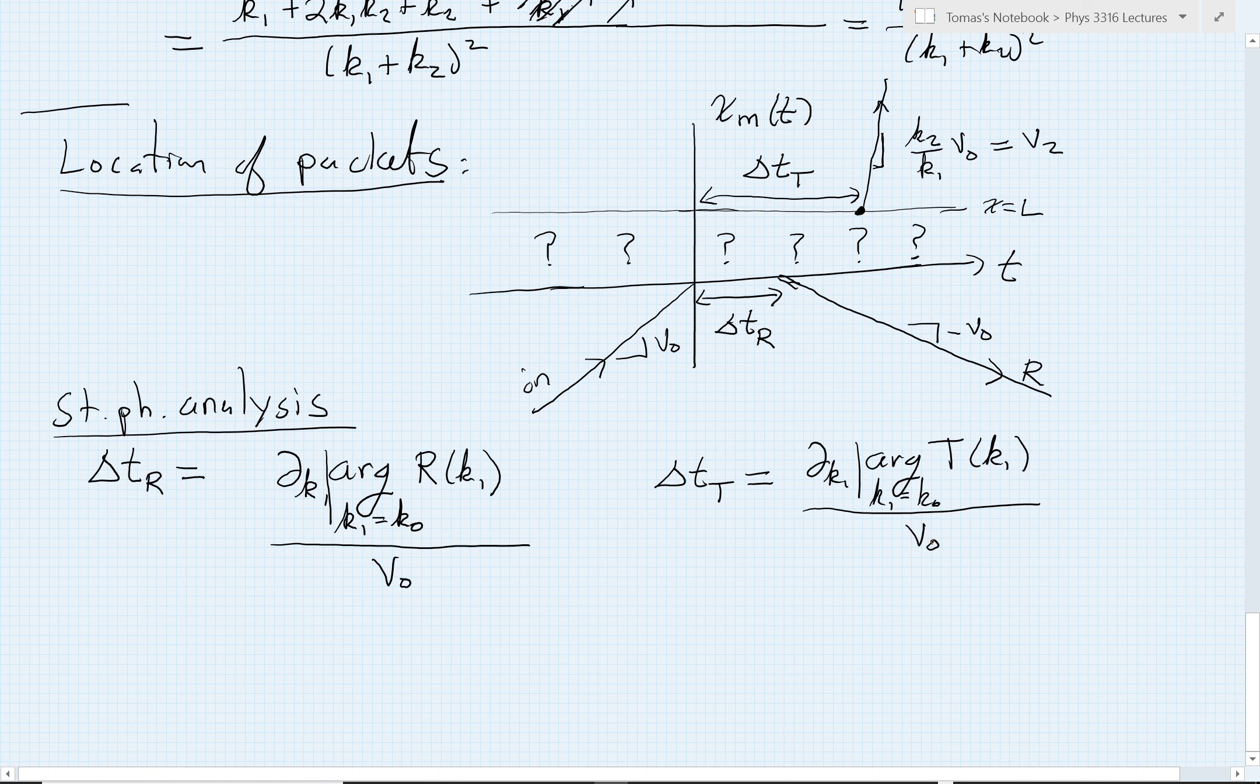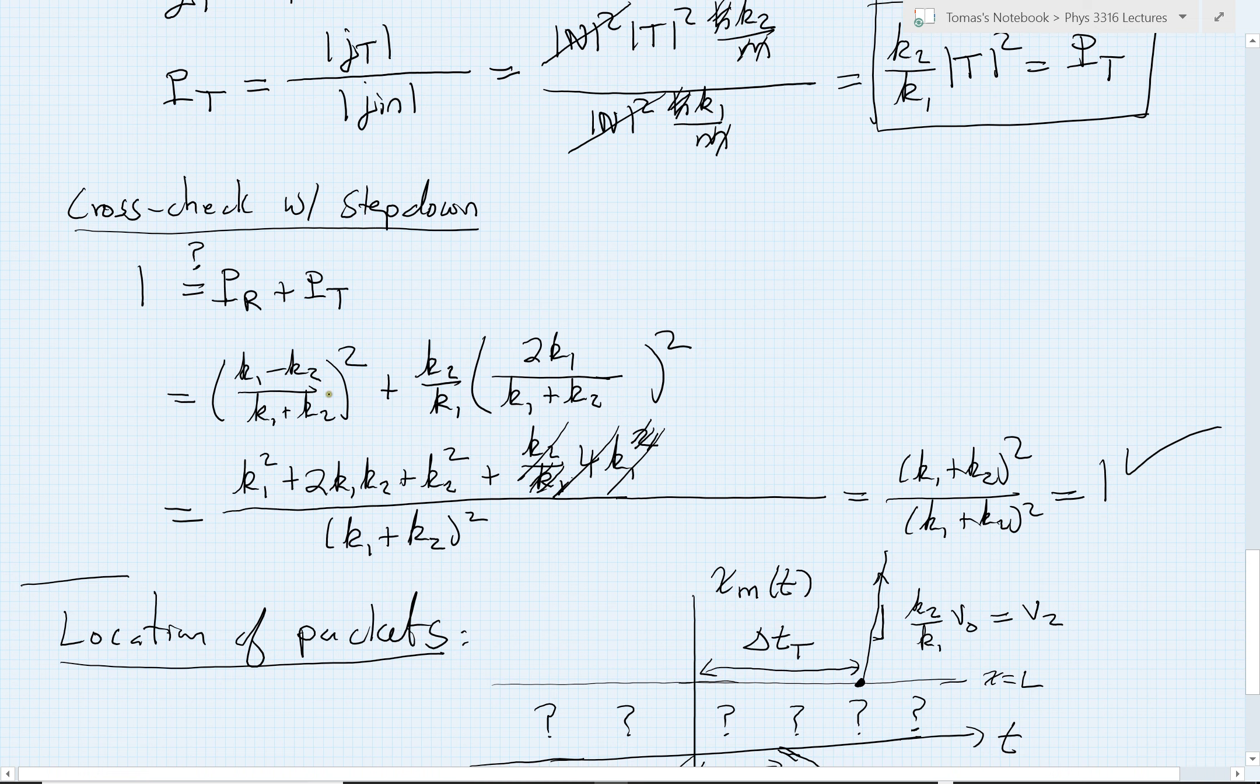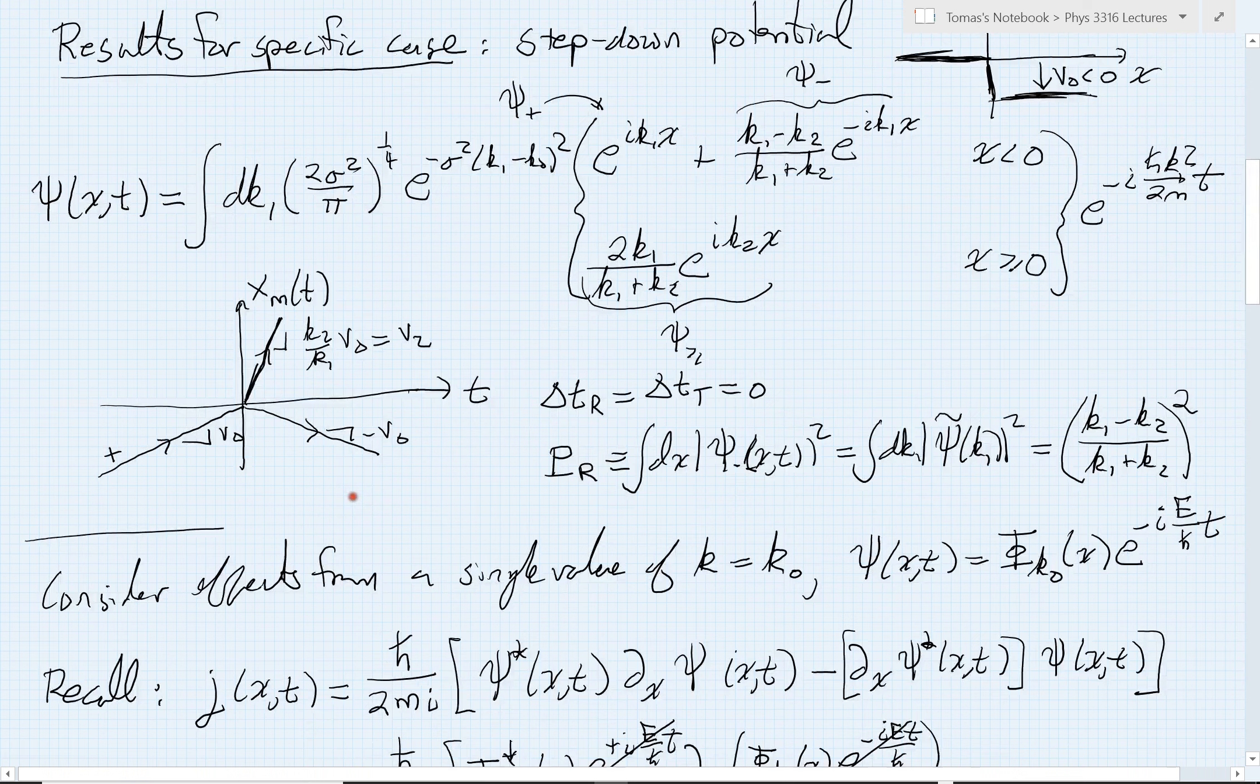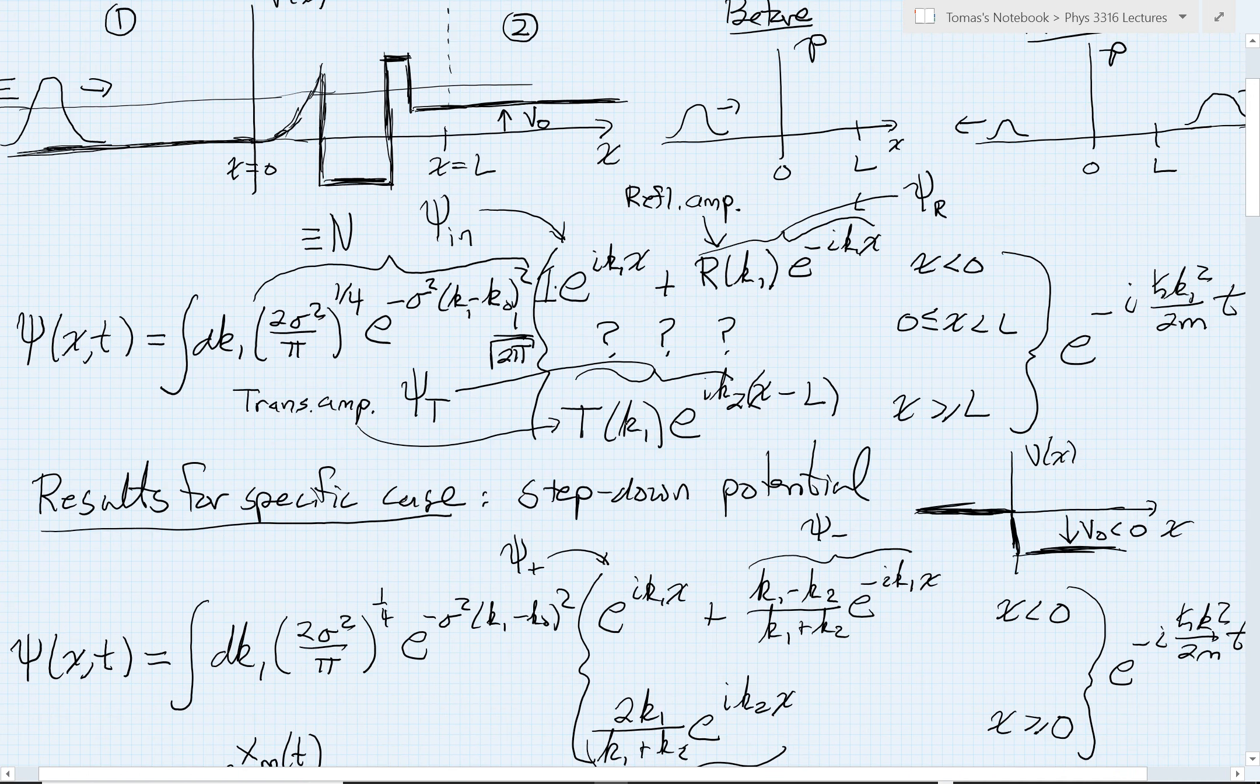So now you see we can get everything. We can get packet locations, we can get time delays, we can get the packet sizes and the reflection and transmission probabilities all out of the general solution. All we need to do is look at the solution to the time independent Schrodinger equation. Everything can then be gotten from it. And in fact it can all be boiled down to the behavior of these complex numbers, the phases and amplitudes of the reflection amplitude and the transmission amplitude. And that then wraps up our discussion of scattering theory.